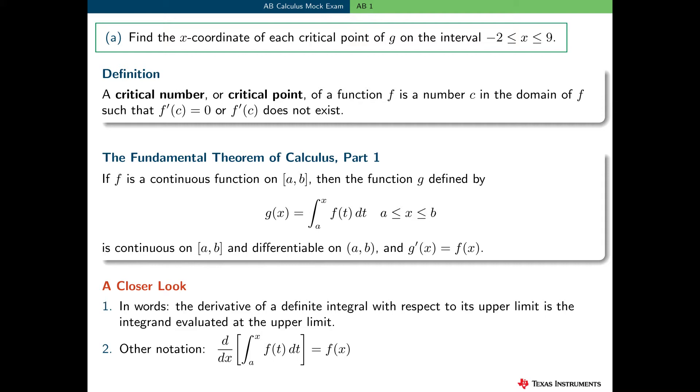There are at least two important concepts that the student needs to use in order to answer this question. First, we need to use the definition of a critical point. A critical number, or a critical point, of a function f is a number c in the domain of f, such that f prime of c is equal to 0, or f prime of c does not exist.